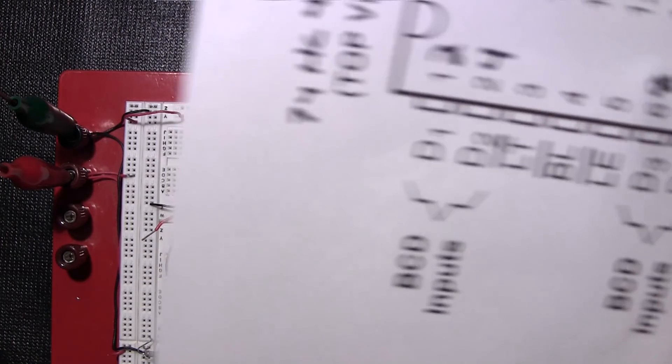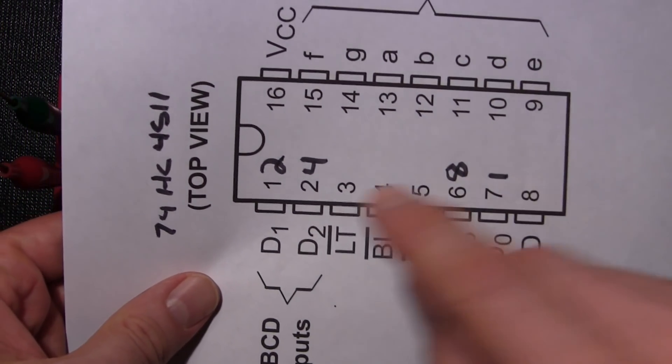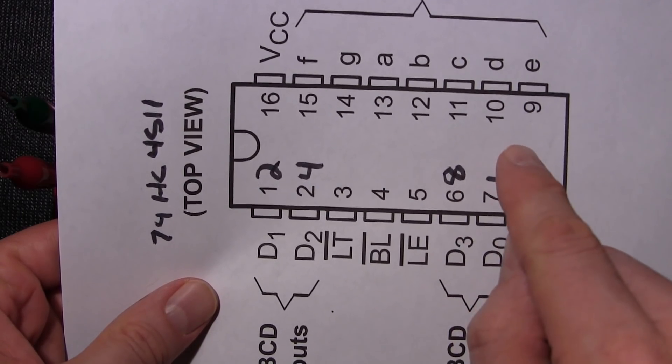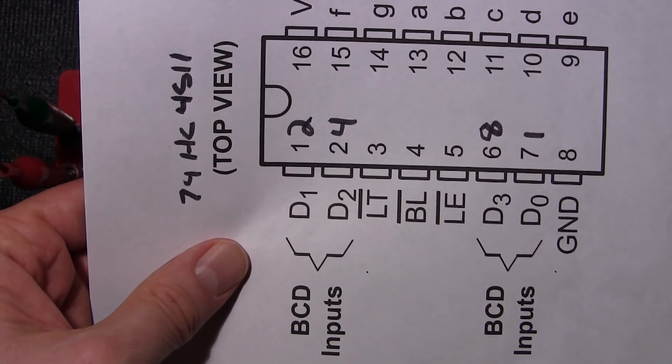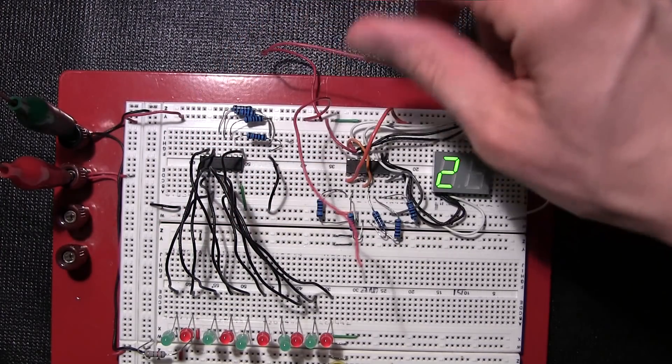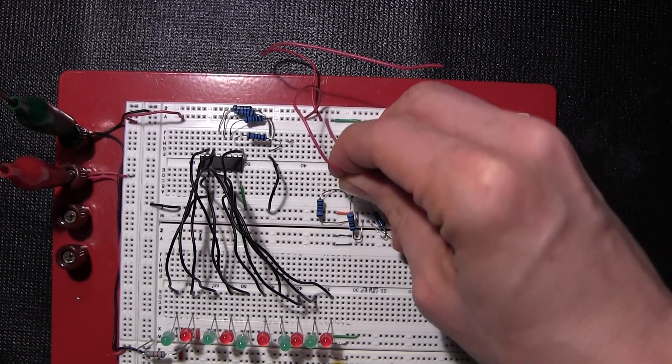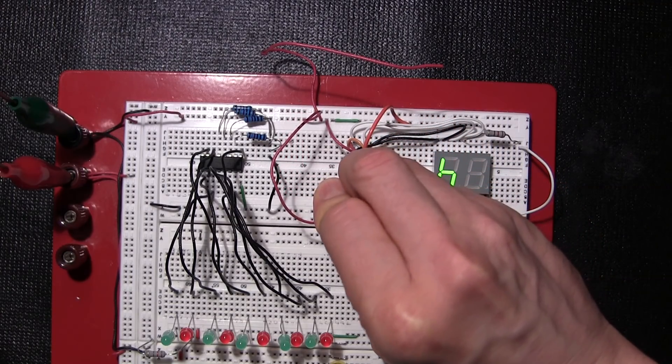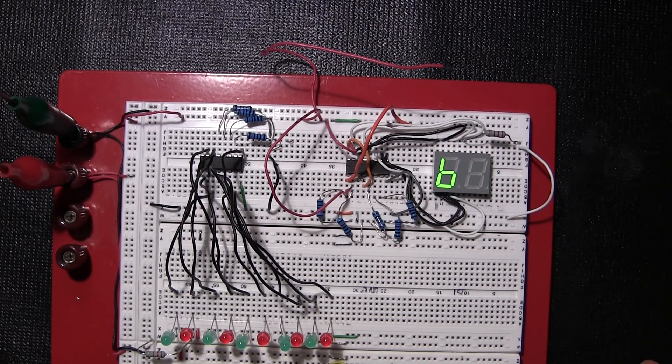Now if I wanted to make that say number 6, this would be 1, 1, 0, 0. So I'll put 5 volts on D2 here, and that will give us the number 6. And there we have the number 6.